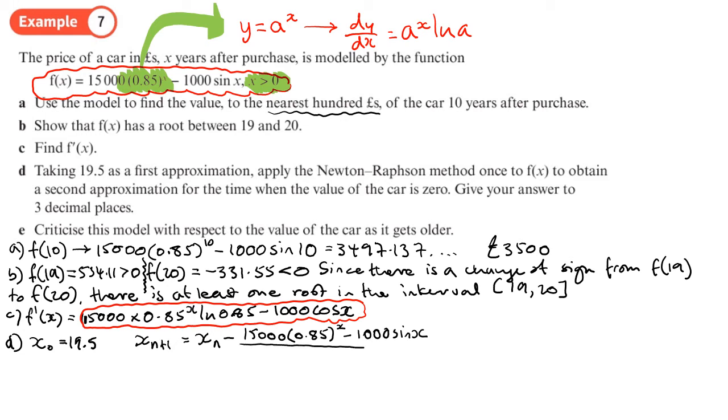Over f dash of x, which we've just worked out, which is 15,000 times by 0.85 to the power x log 0.85 minus 1000 cos x. And we've got our x₀, so to get x₁ we just plug x₀, or we plug 19.5 where we have x.